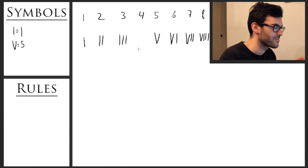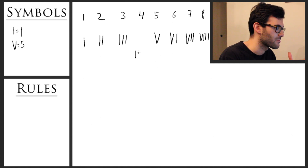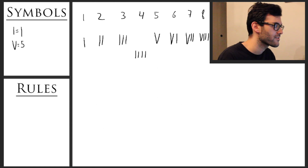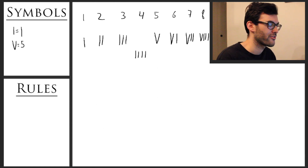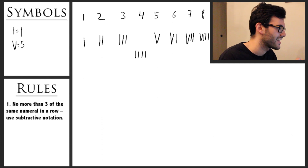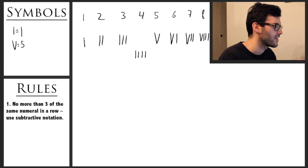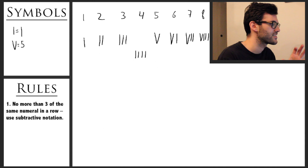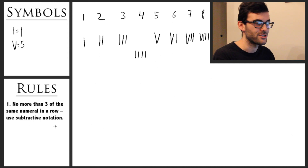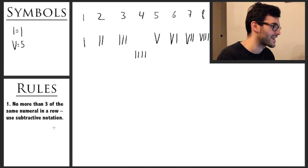Four. If we were writing this as maybe we would expect, the number would be IIII — just four ones, it makes four. However, one of the two rules you need to know for Roman numerals is that you'll never have more than three of the same numeral in a row. To get around this, you need to use what's called subtractive notation.